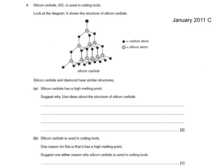Here's a past paper question. Silicon carbide, or SiC, is used in cutting tools. Look at the diagram - it shows the structure of silicon carbide. You can see the similarity between this and the structure of diamond. Silicon carbide has a high melting point, so explain why, using ideas about its structure.